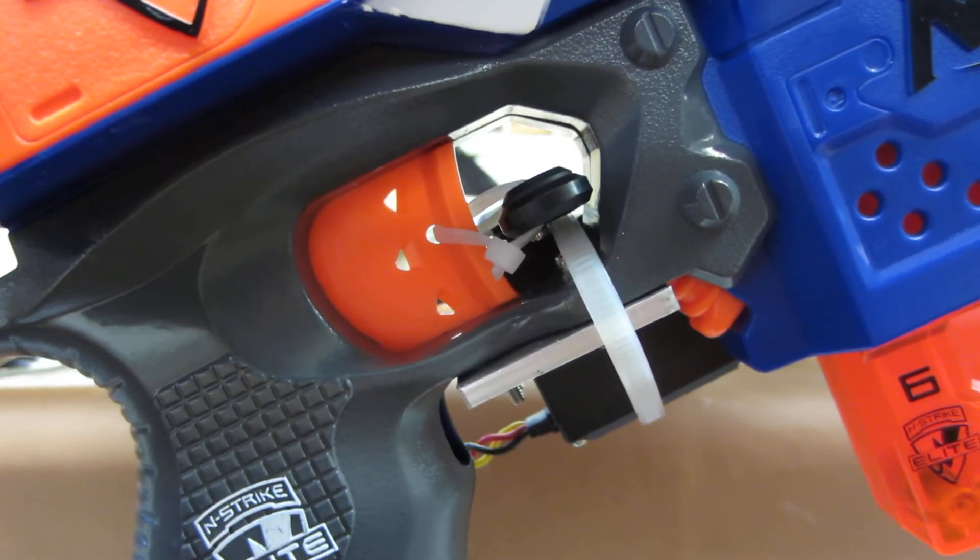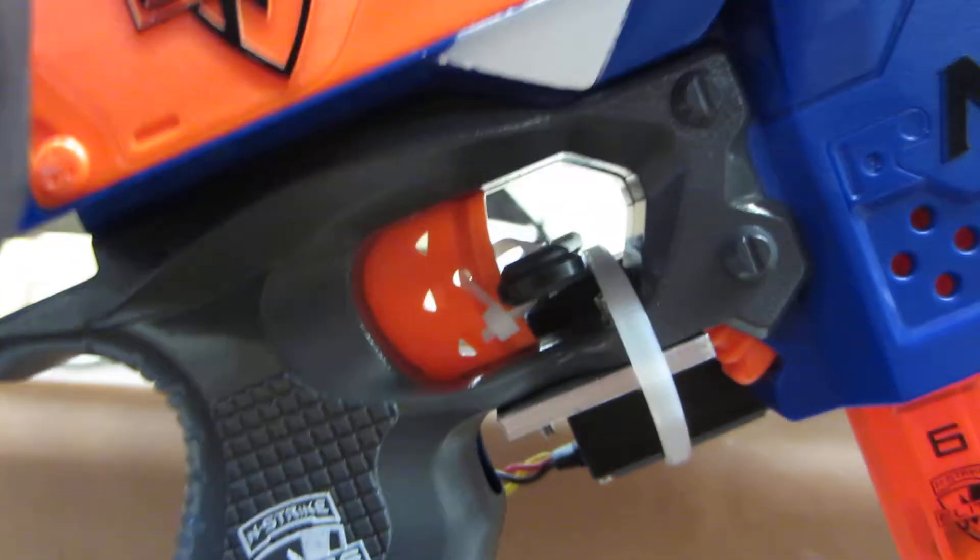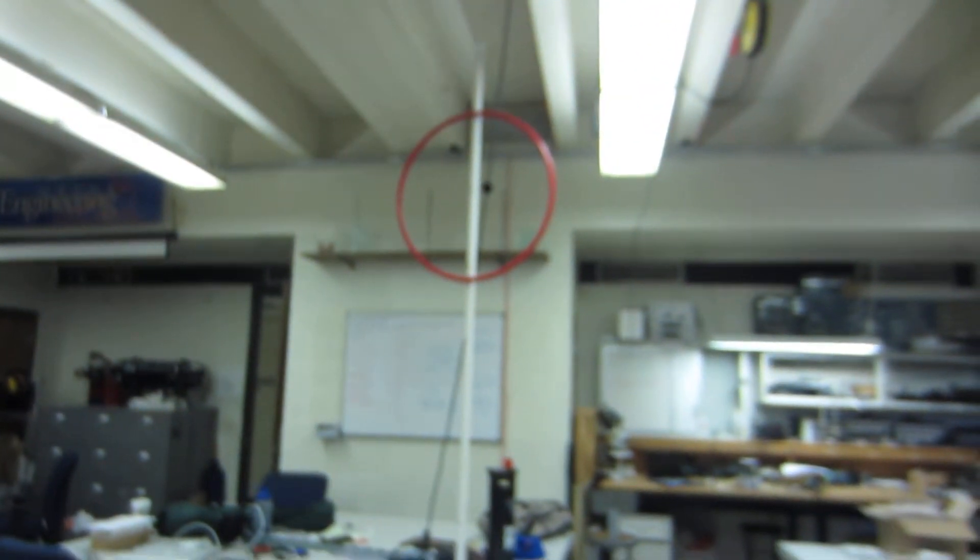So now, let's actually put the darts in there, and we'll do a test to see if we can get the darts through the target hoop over there.